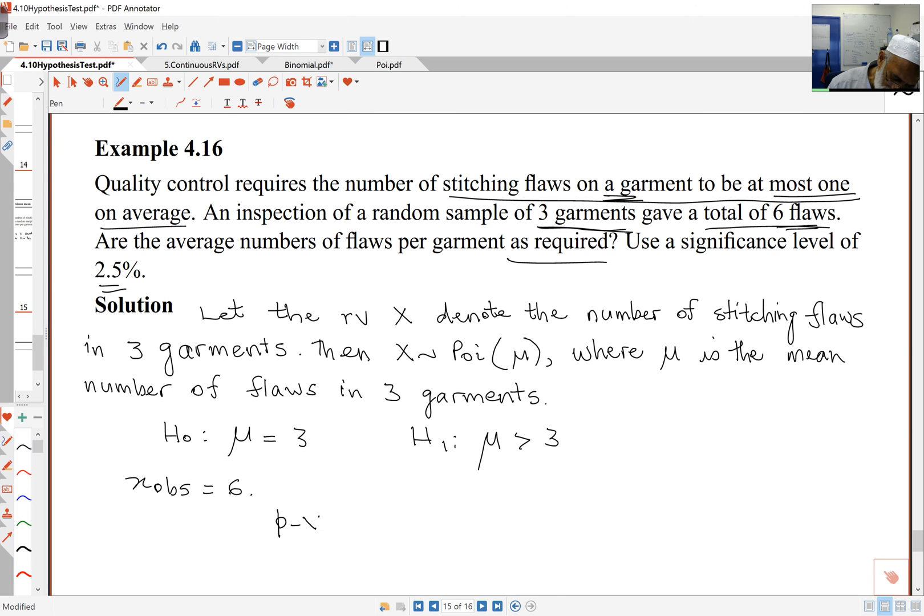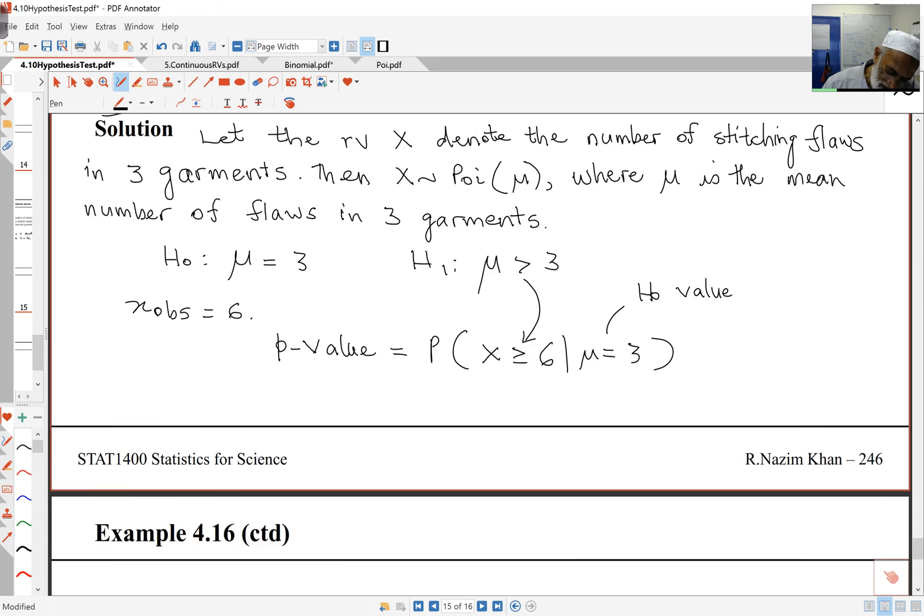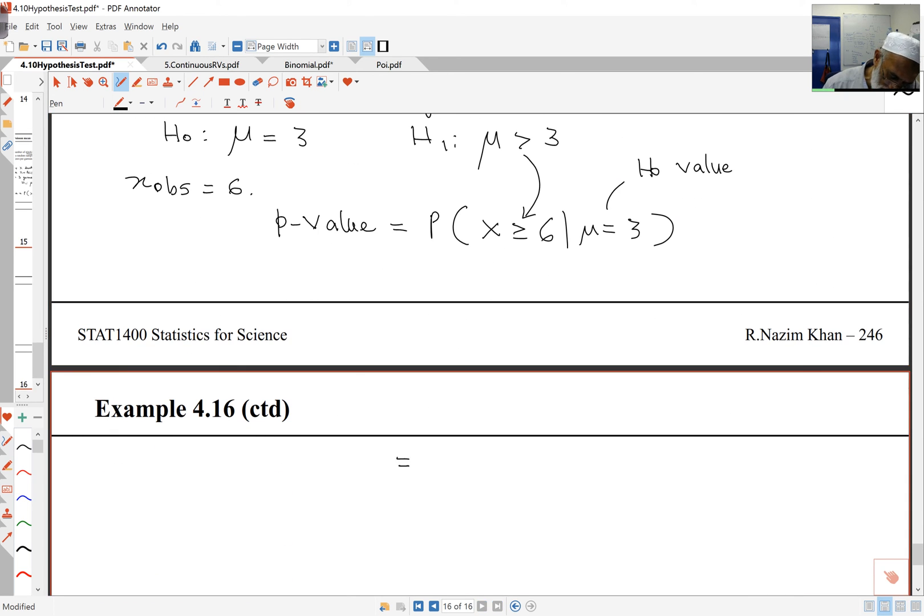My p-value here is the probability of getting six or more, so X bigger than or equal to six, and that inequality holds in the same direction as the alternative hypothesis. This is under the assumption that mu is actually equal to three, my null hypothesis value.